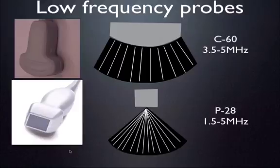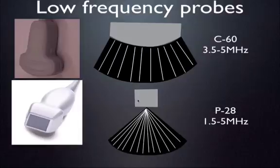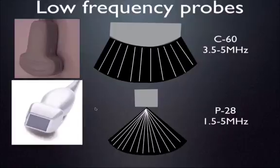The phased array probe, sometimes called the cardiac probe, is also a low frequency probe at 1.5 to 5 megahertz. It is 28 millimeters across the scan face. Its major strength is its small footprint, which allows you to look between the ribs at the heart, lung, or whatever you're trying to examine in the thorax. You can use it for the abdomen, but it's most commonly used for thoracic imaging.